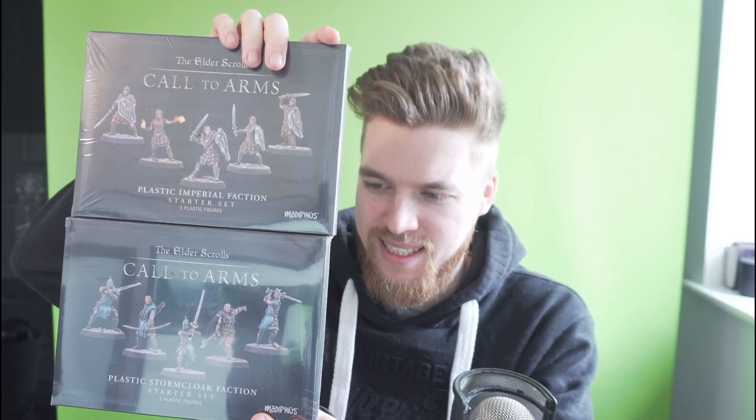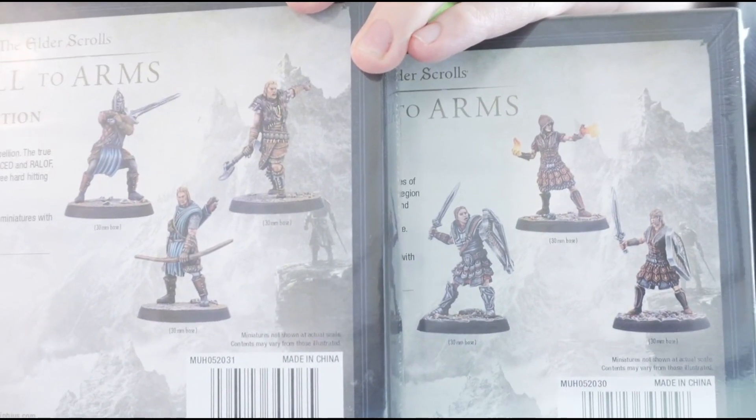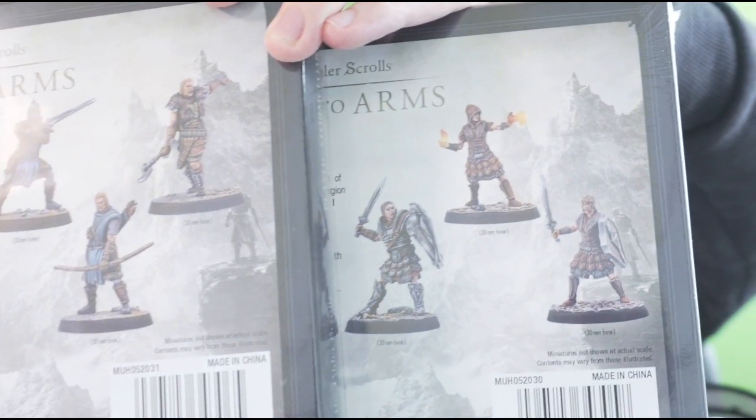So in the Stormcloak set, we have Ulfric Stormcloak, I can't say his name. Thrice Pierced, Stormcloak Commander. Ralof, who's the person you escape Helgen with if you make the choice to side with the Stormcloaks. You guys can see the back of both these packages. I love the Imperial armor though, it just looks. But this, this is the codex, this is the rule book.